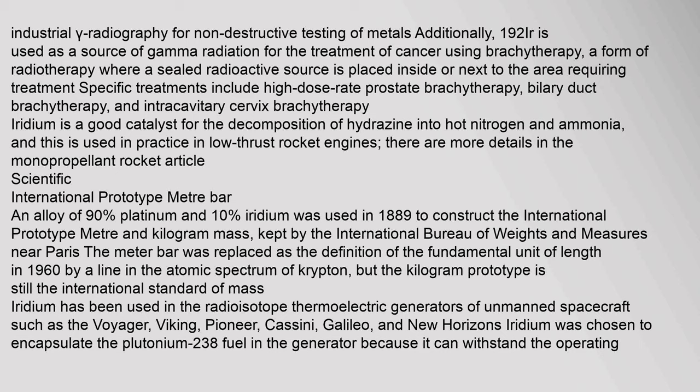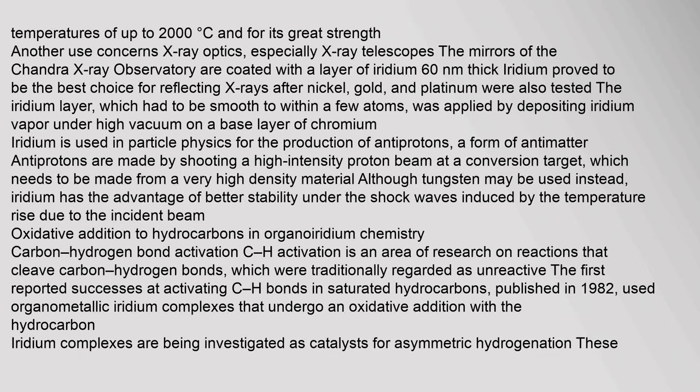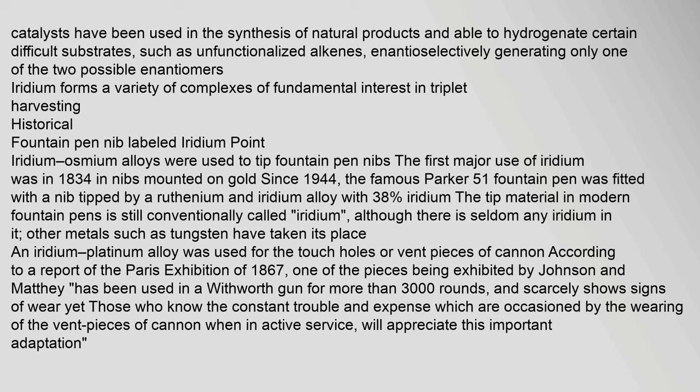An alloy of 90% platinum and 10% iridium was used in 1889 to construct the International Prototype Meter and kilogram mass, kept by the International Bureau of Weights and Measures near Paris. The meter bar was replaced as the definition of the fundamental unit of length in 1960 by a line in the atomic spectrum of krypton, but the kilogram prototype is still the international standard of mass. Iridium has been used in the radioisotope thermoelectric generators of unmanned spacecraft such as the Voyager, Viking, Pioneer, Cassini, Galileo, and New Horizons. Iridium was chosen to encapsulate the plutonium-238 fuel in the generator because it can withstand operating temperatures of up to 2,000°C. Iridium-based catalysts have been used in the synthesis of natural products and are able to hydrogenate certain difficult substrates enantioselectively.